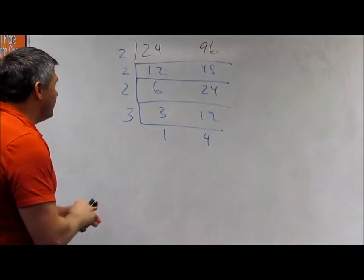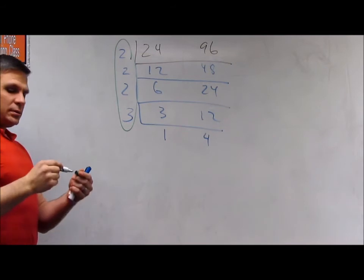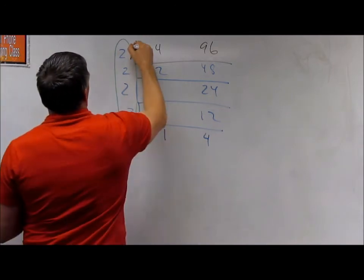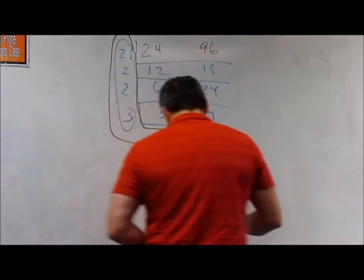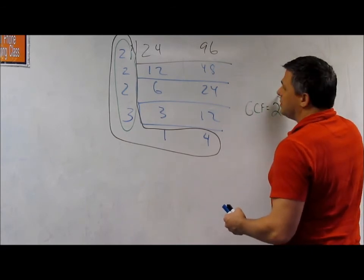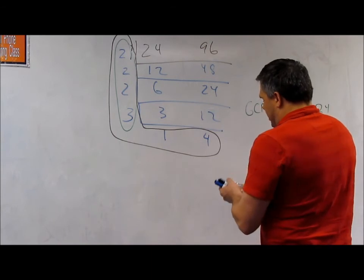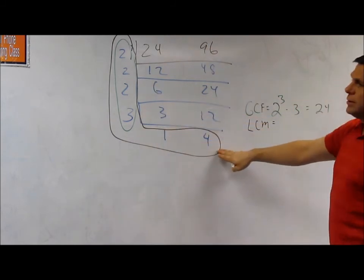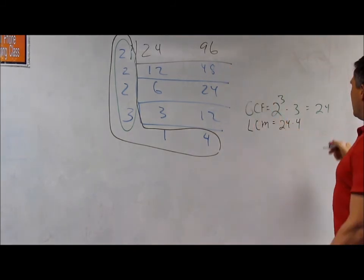So now, what I have is my GCF is right here, and my LCM makes the L. So off the bat, I know that my GCF is 2 to the third times 3, which again is 24. And my LCM is 24 times 4, which should still be 96.